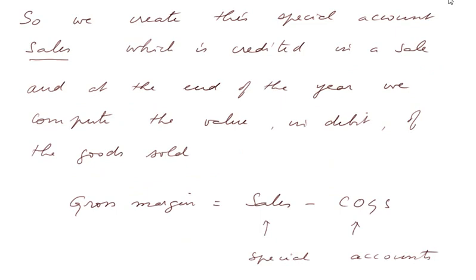Because the sale transaction is the fundamental element of activity which generates profit. So we create this special account, sales, which is credited in a sale. And at the end of the year, we compute the value in debit of the goods sold. And we have the formula, gross margin equals sales minus COGS, which is implicitly calculated in the income statement. But the sales account is special and so is the COGS account. These two accounts are special accounts created by Italian merchants eight centuries ago in order to compute the profit. First of all, the gross profit to which we shall subtract various other charges of the year and compute eventually the income of the year, the net income.